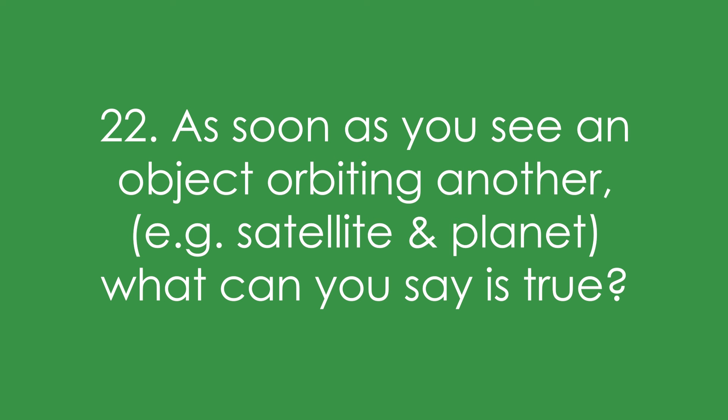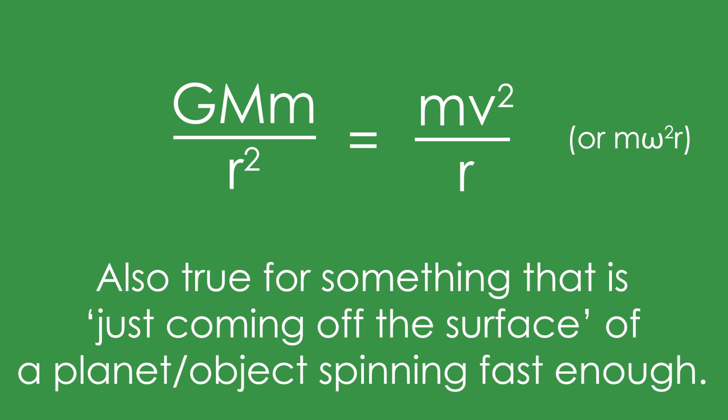Twenty-two, as soon as you see an object orbiting another, like a satellite and a planet, what can you say is true? What equation can you write down? We know that GMm over r squared is equal to mv squared over r. The gravitational force is the centripetal force. It can be m omega squared r instead, depends what you need. Note that this is also true for something that is just coming off the surface of a planet or an object that is spinning fast enough.